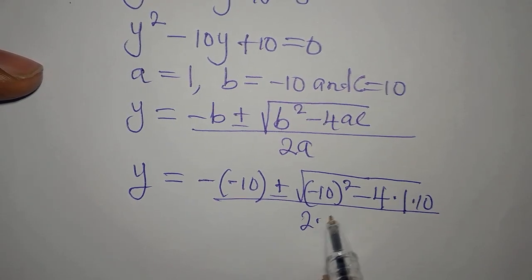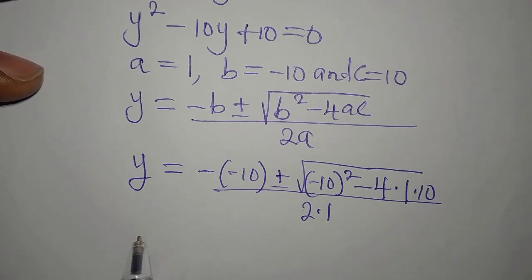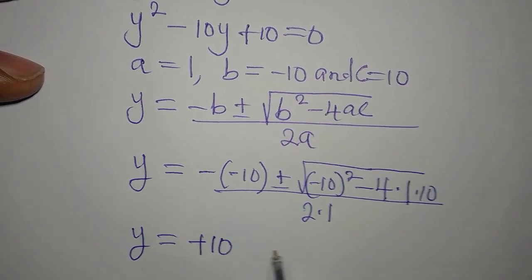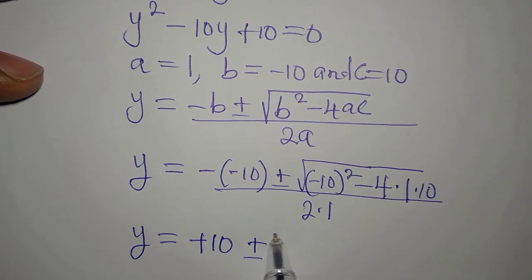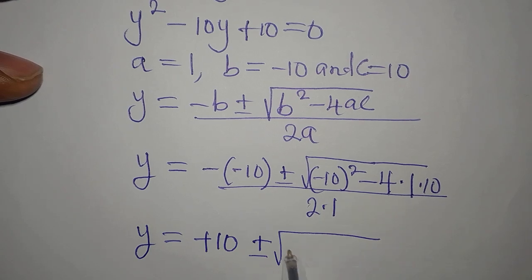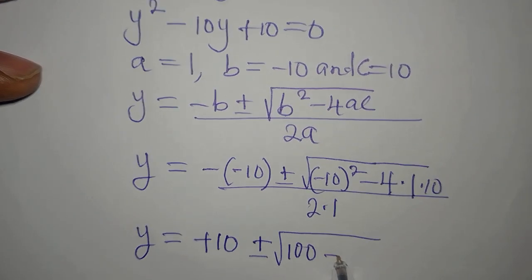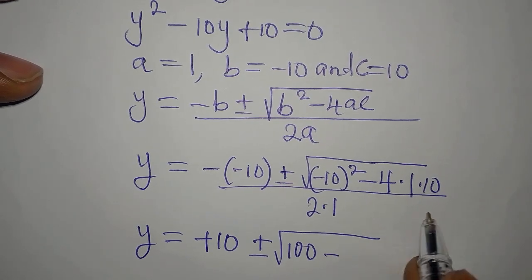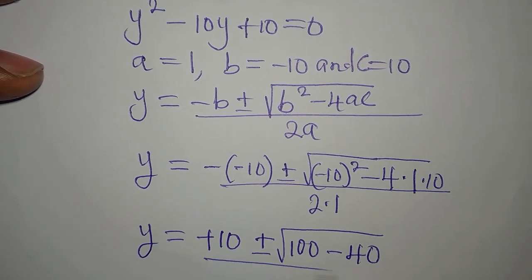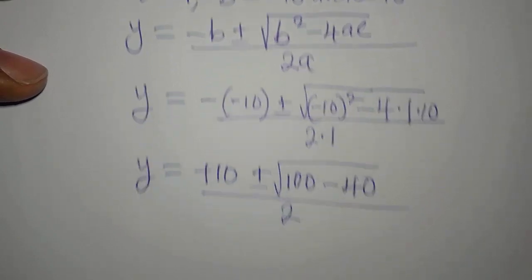All of that will be divided by 2 times 1. So y will be plus 10, then plus or minus, 10 squared is 100, then minus 4 times 1 times 10 is 40, divided by 2.